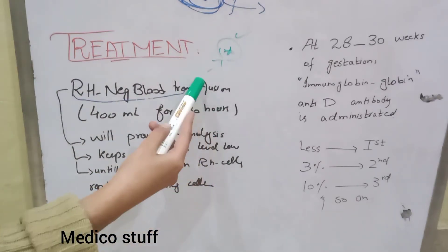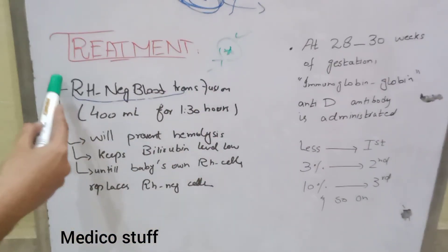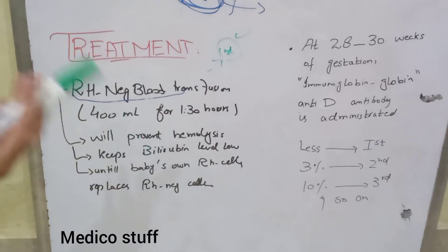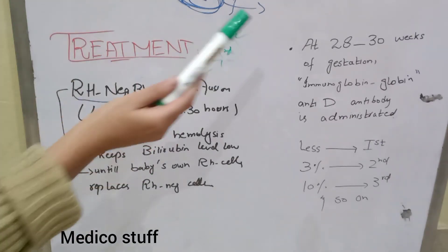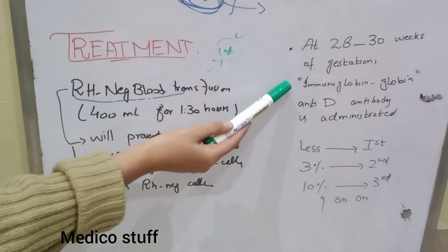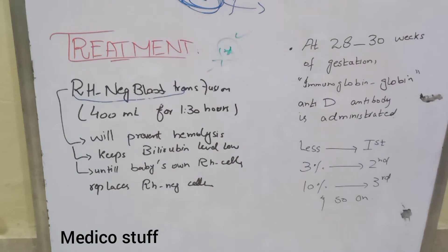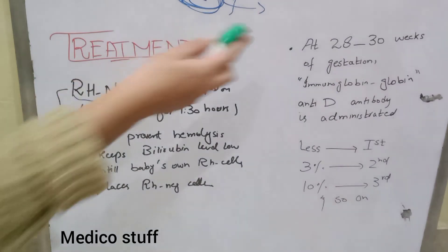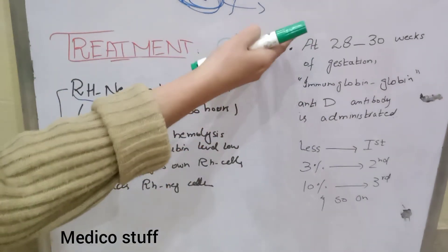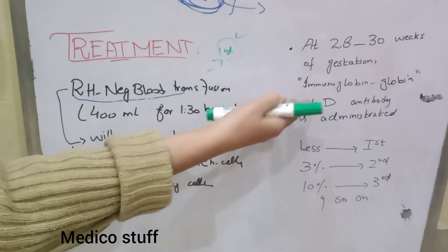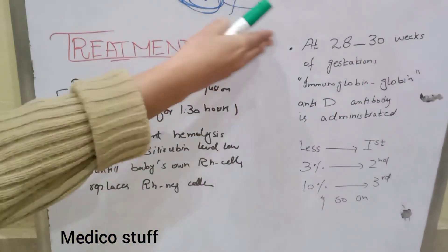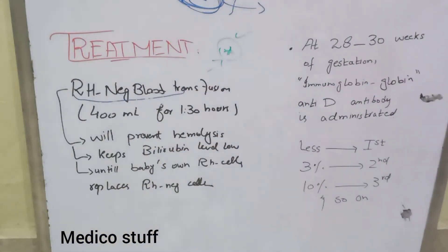This is the treatment after the baby is born, but erythroblastosis fetalis can also be prevented during pregnancy. The procedure is to give an anti-D immunoglobulin injection — an RhoGAM antibody injection — to the expectant mother at the 28th to 30th week of gestation.